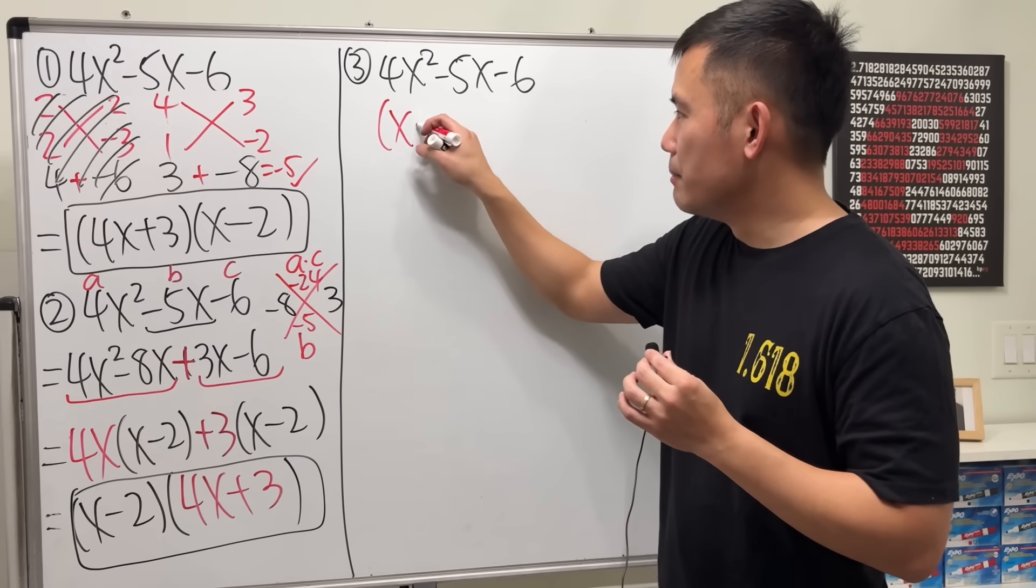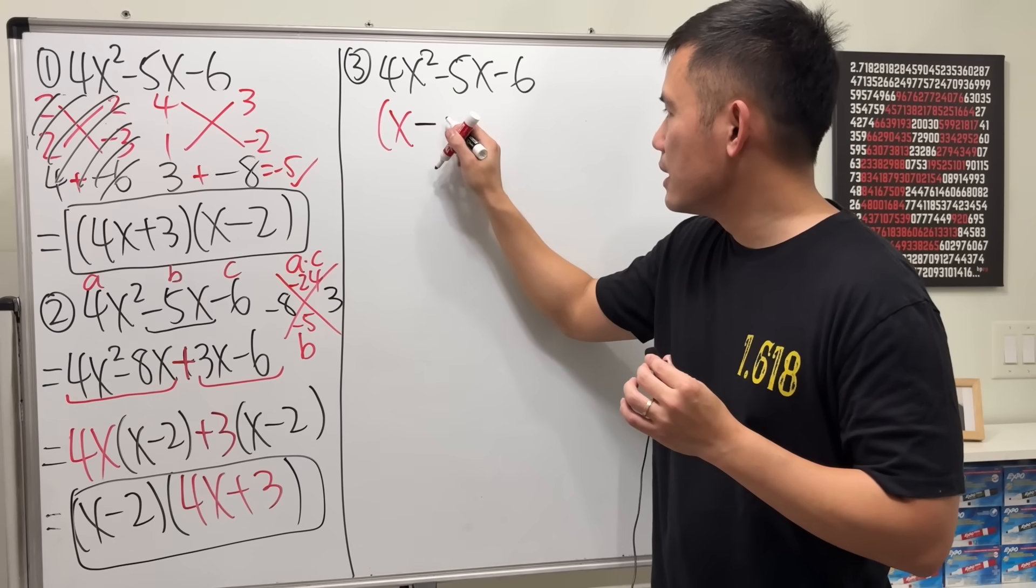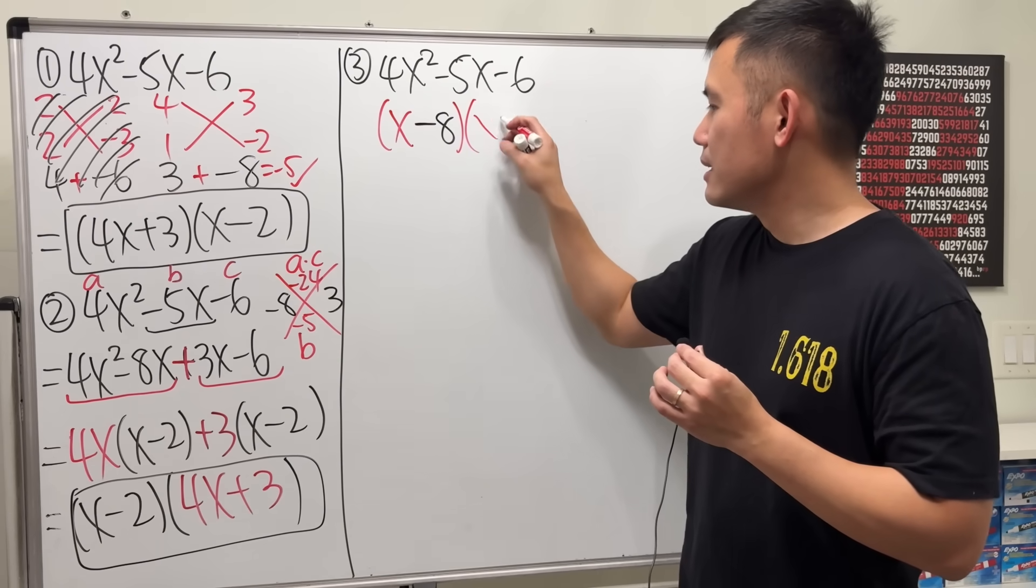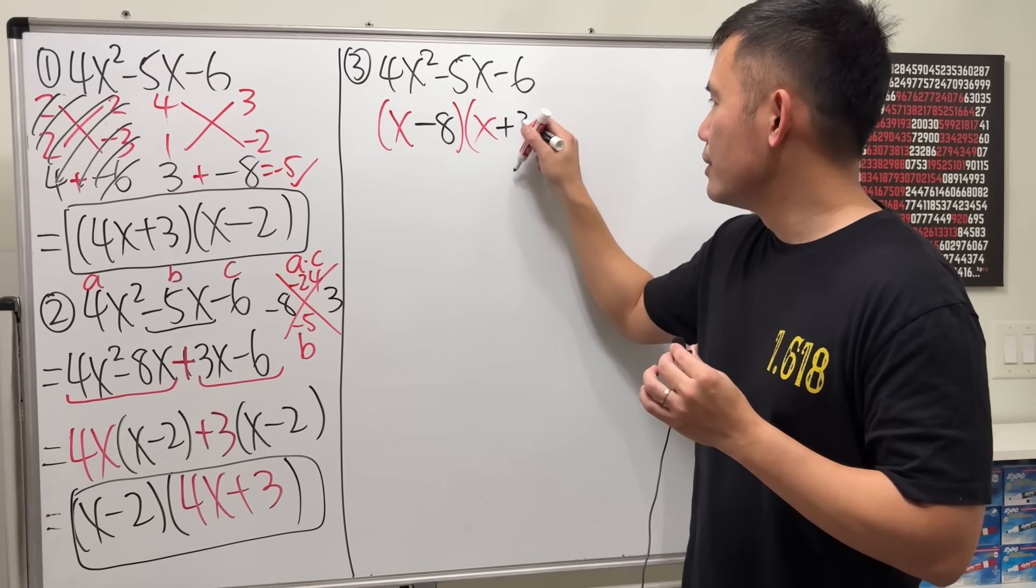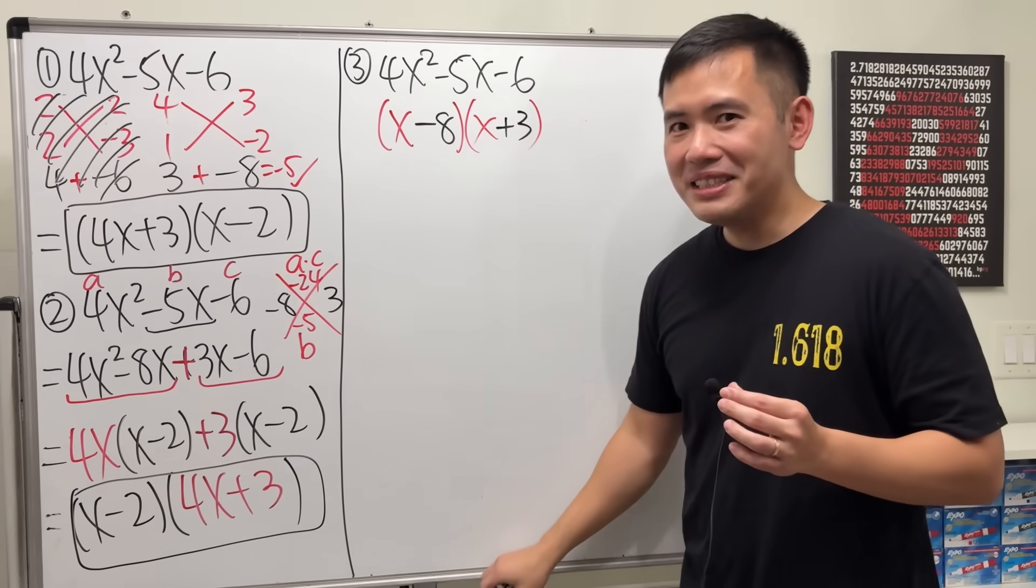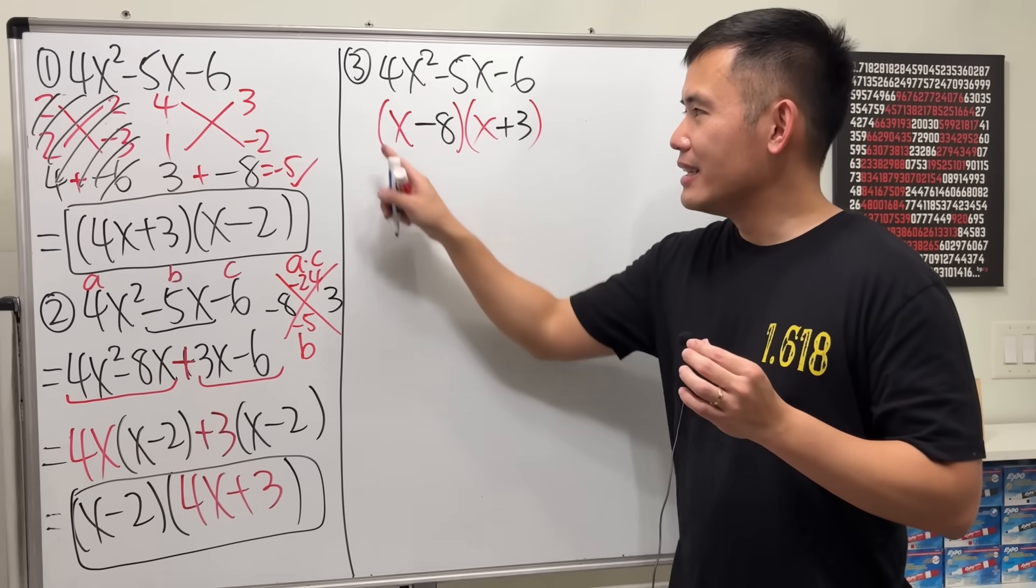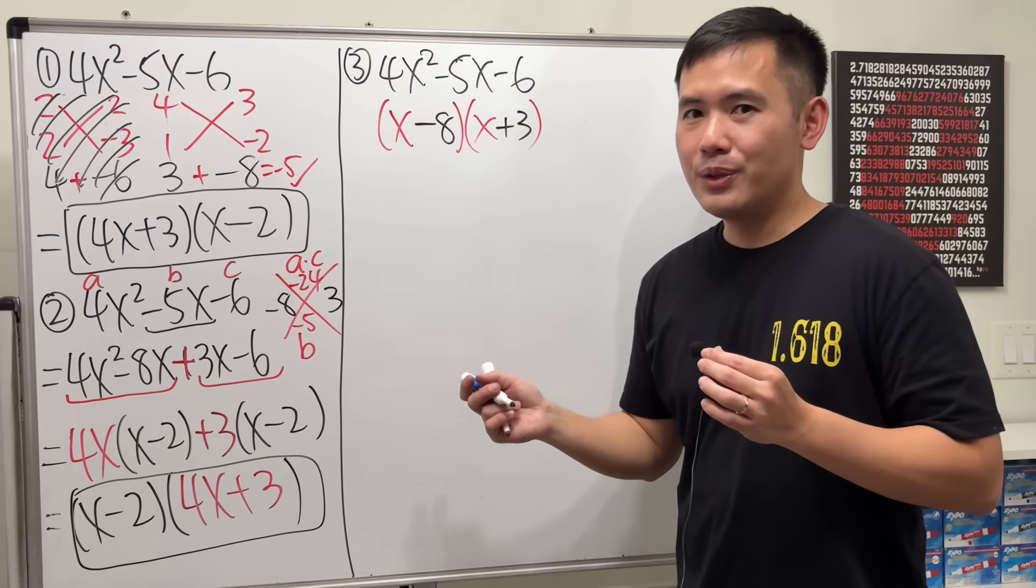Ready? We're just going to put down x minus 8. And then, times x. And then, plus 3. Wow, is it that easy? No, of course. This is not the same as that. That's why I didn't put down the equal sign.